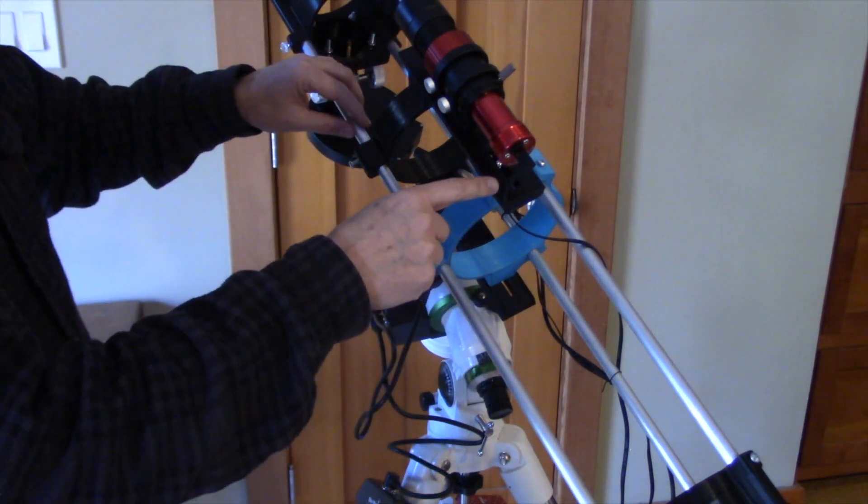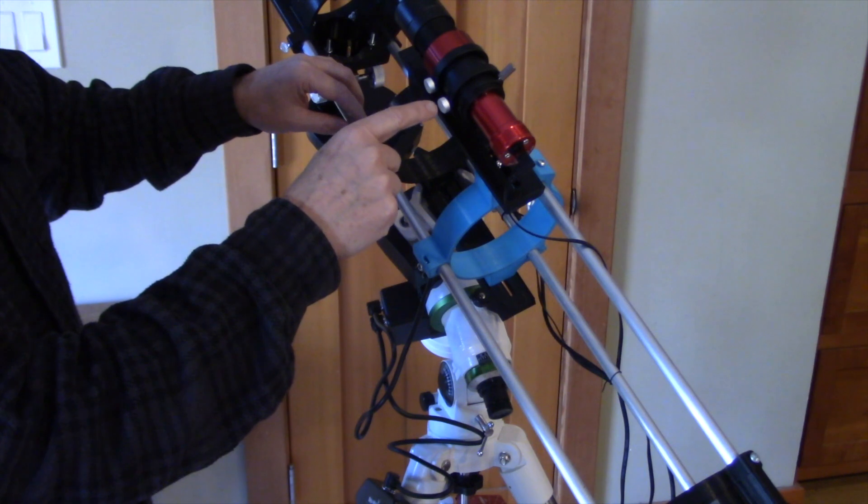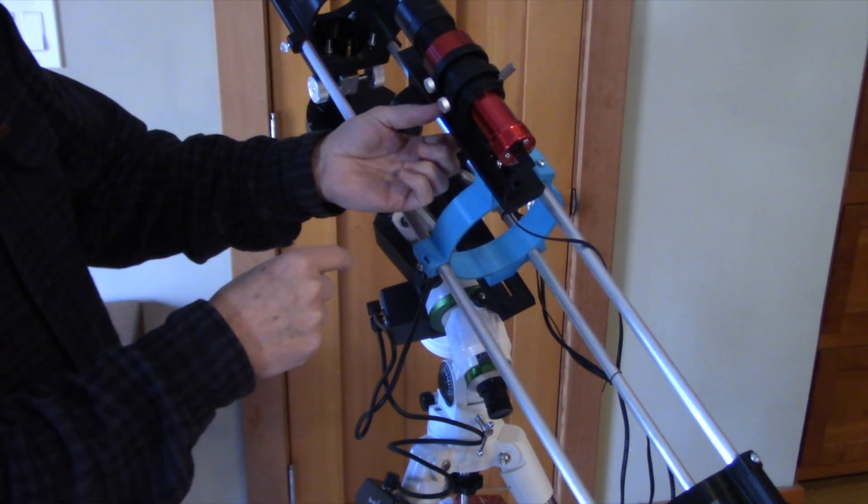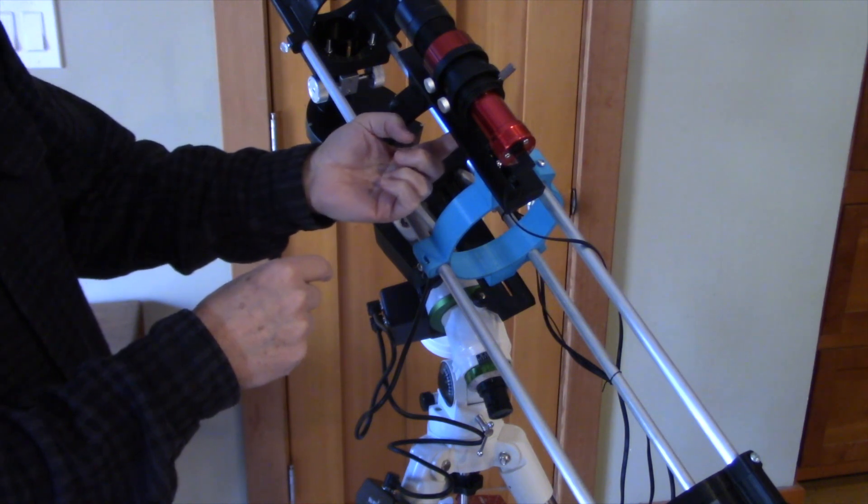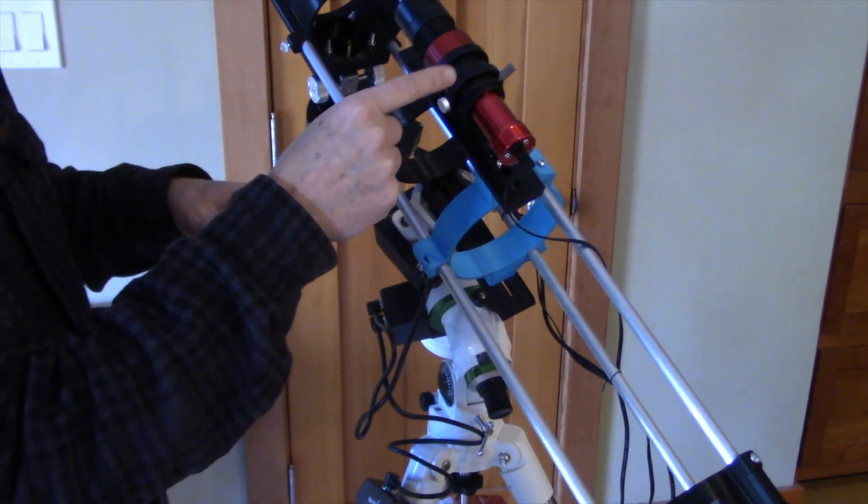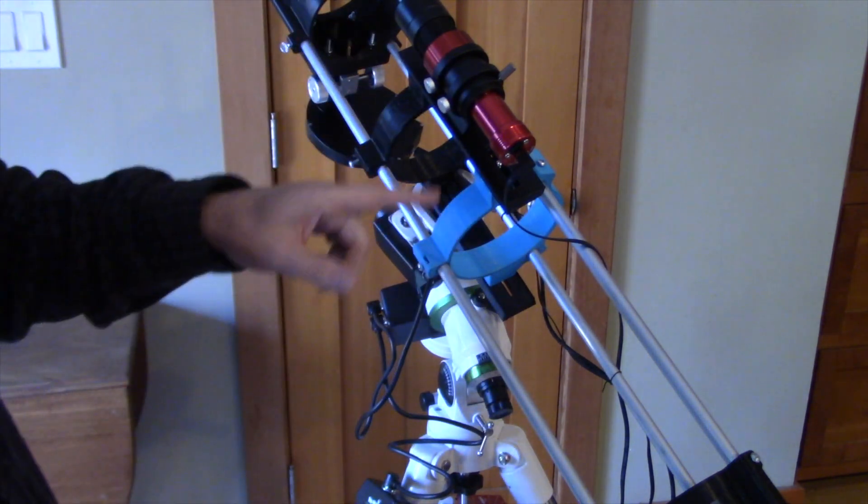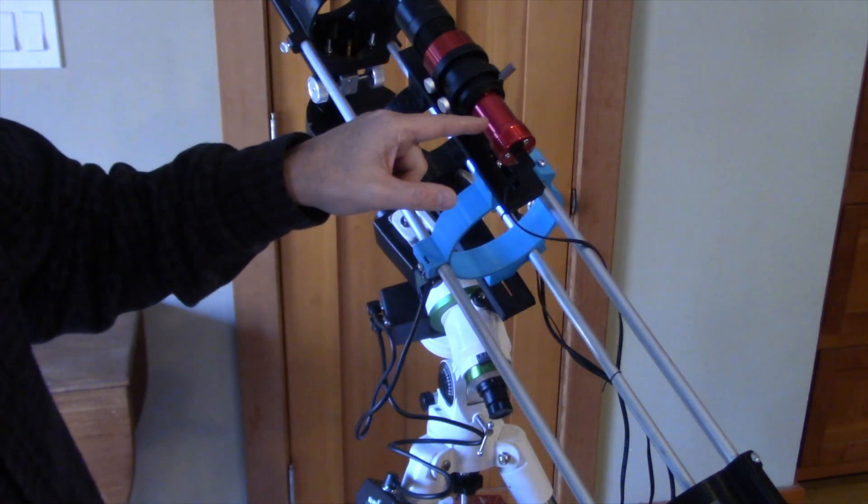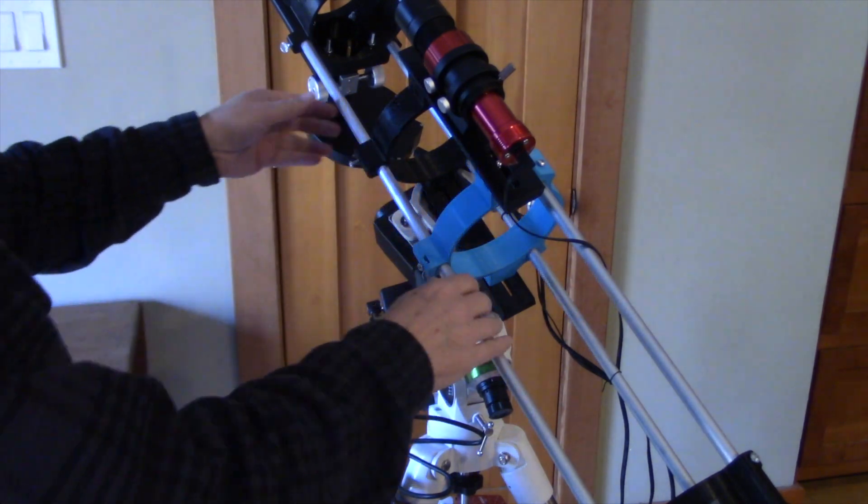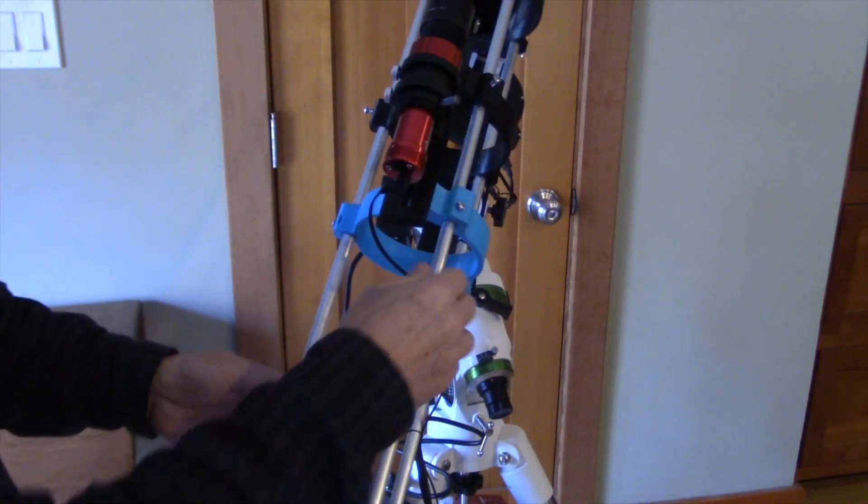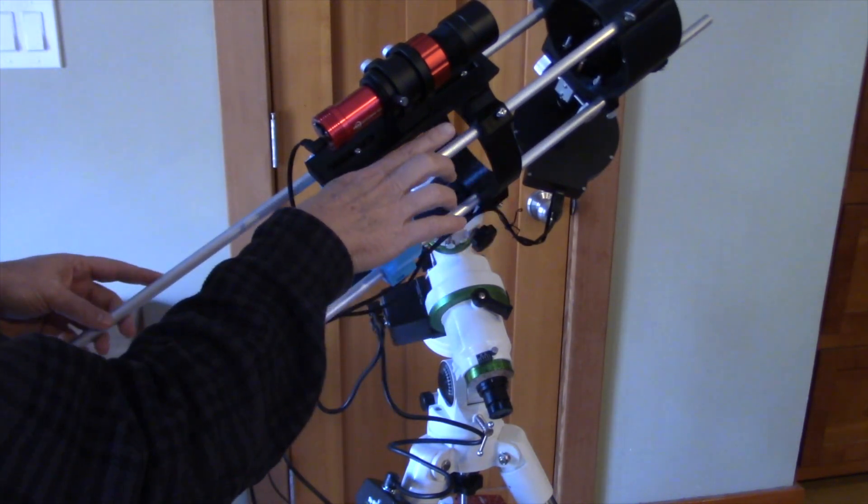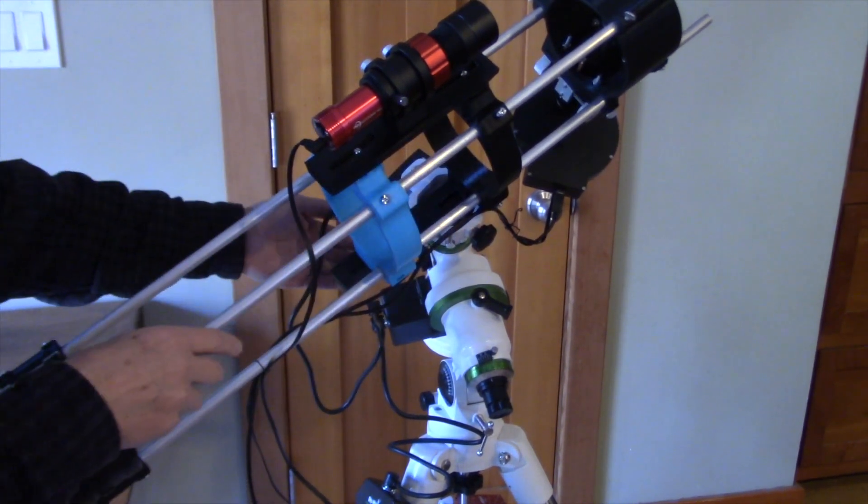And then on one of those, I have the guide scope. I have put a hole in here so I could just use the quarter-20 screw. And I reviewed this guide scope in a previous video, so I'll also have links for that. And I'm using, I believe it's the 120mm guide camera. So that allows you to have a place to put this guide scope on one hand and then the main scope on the other.